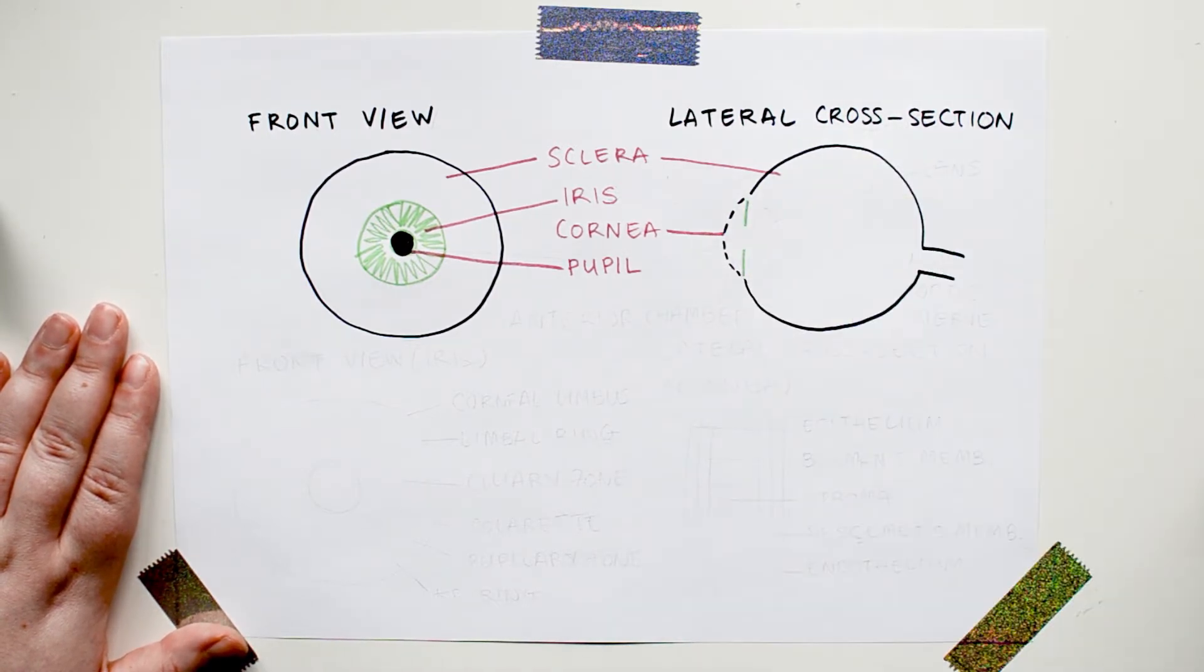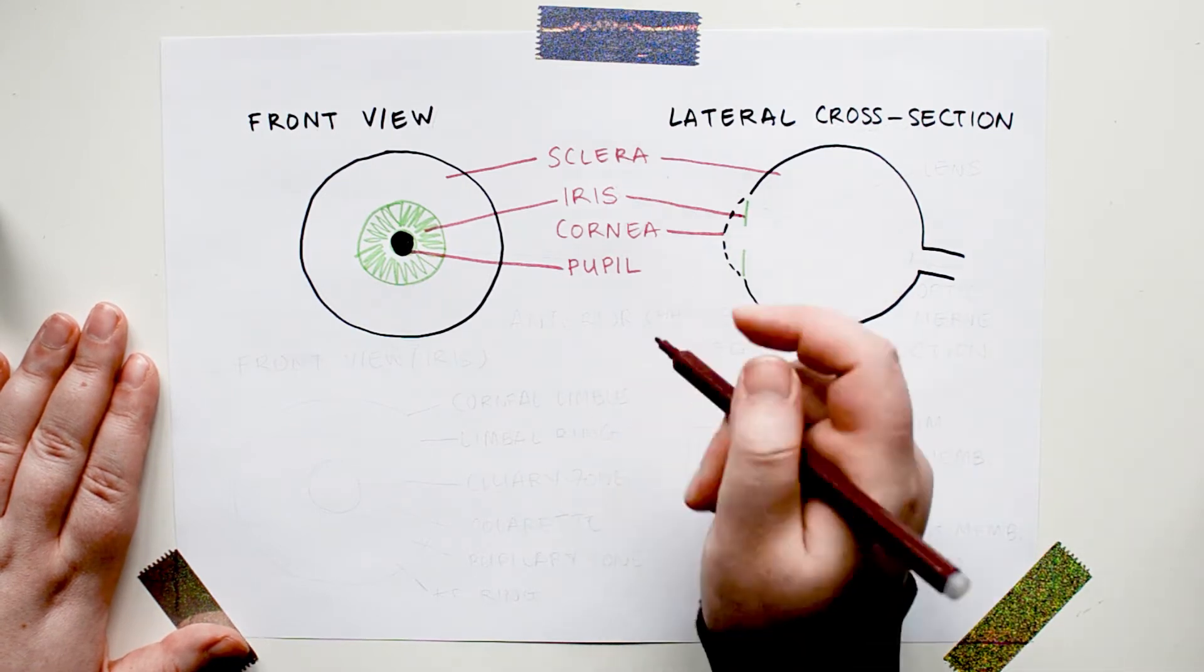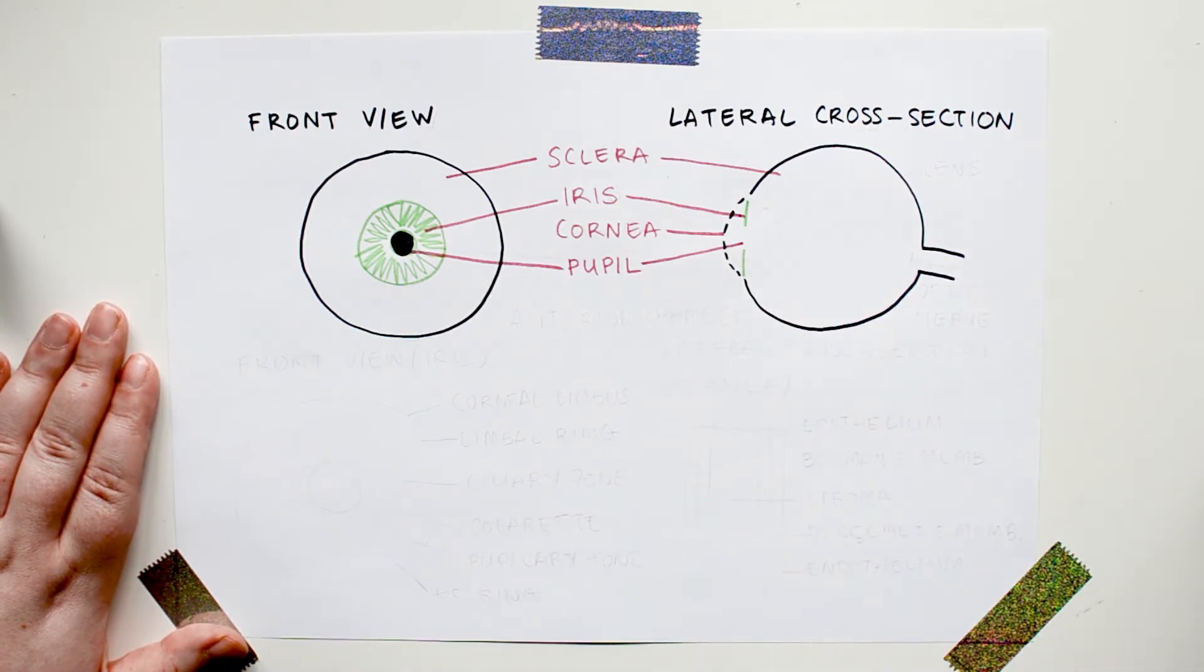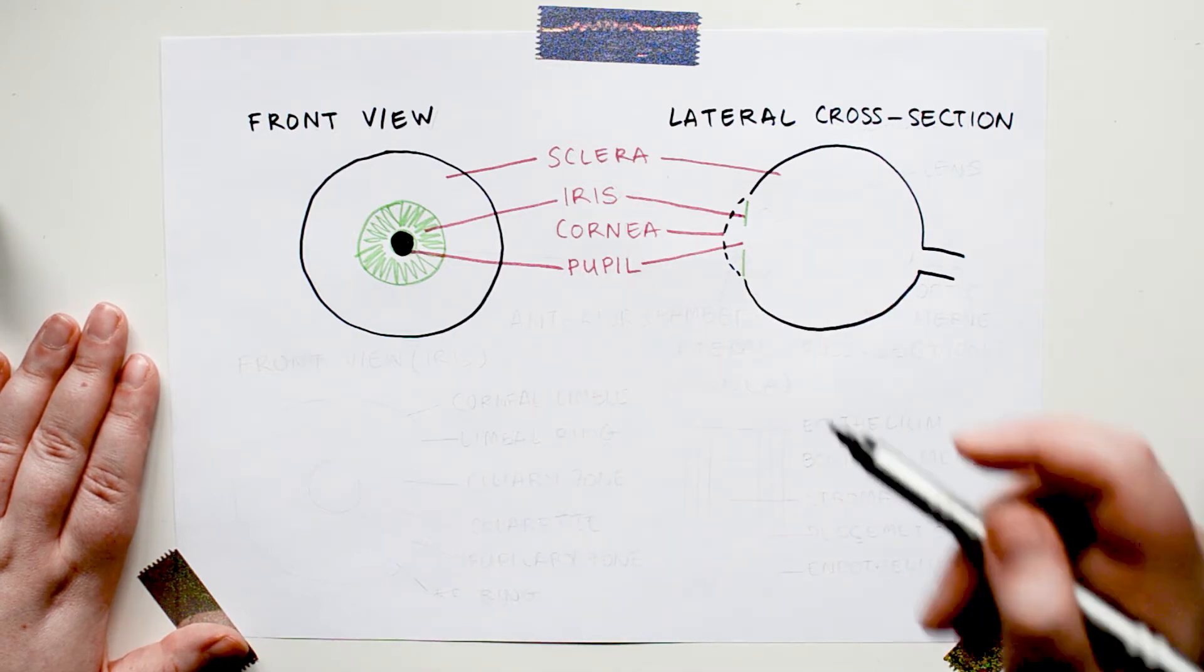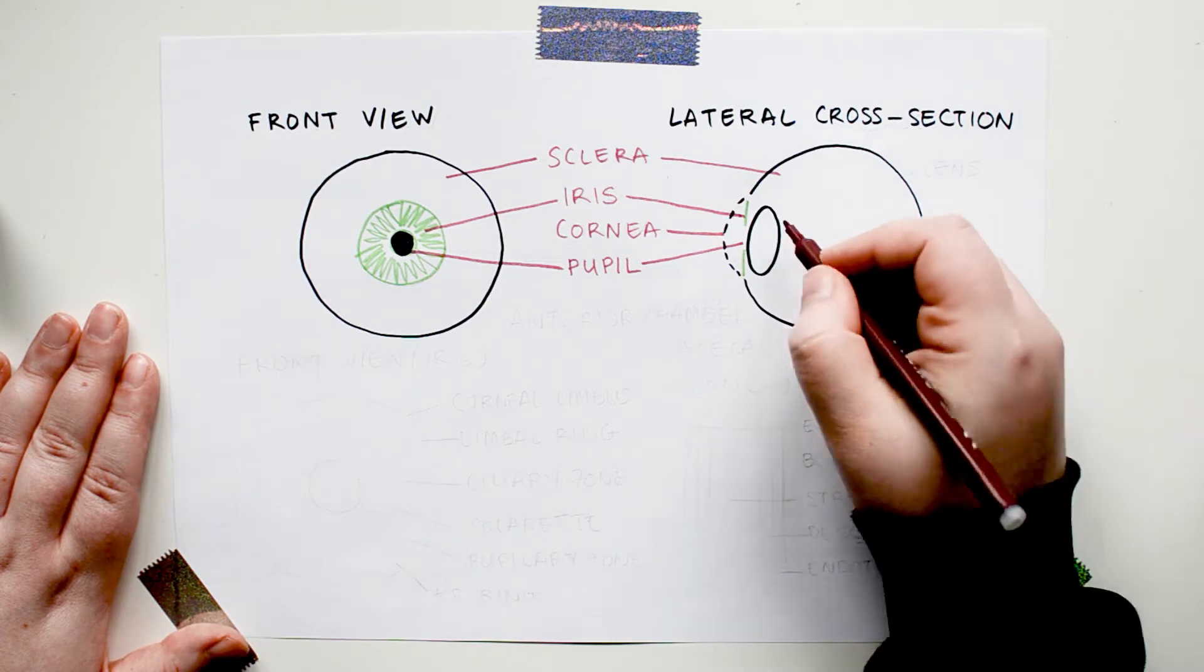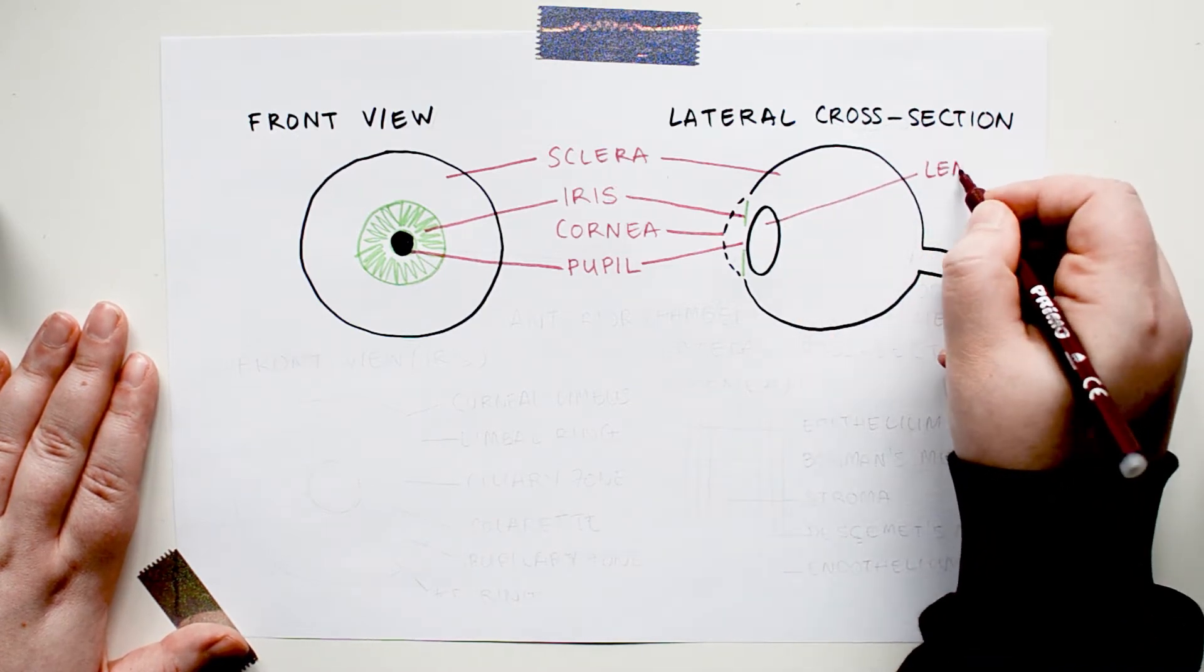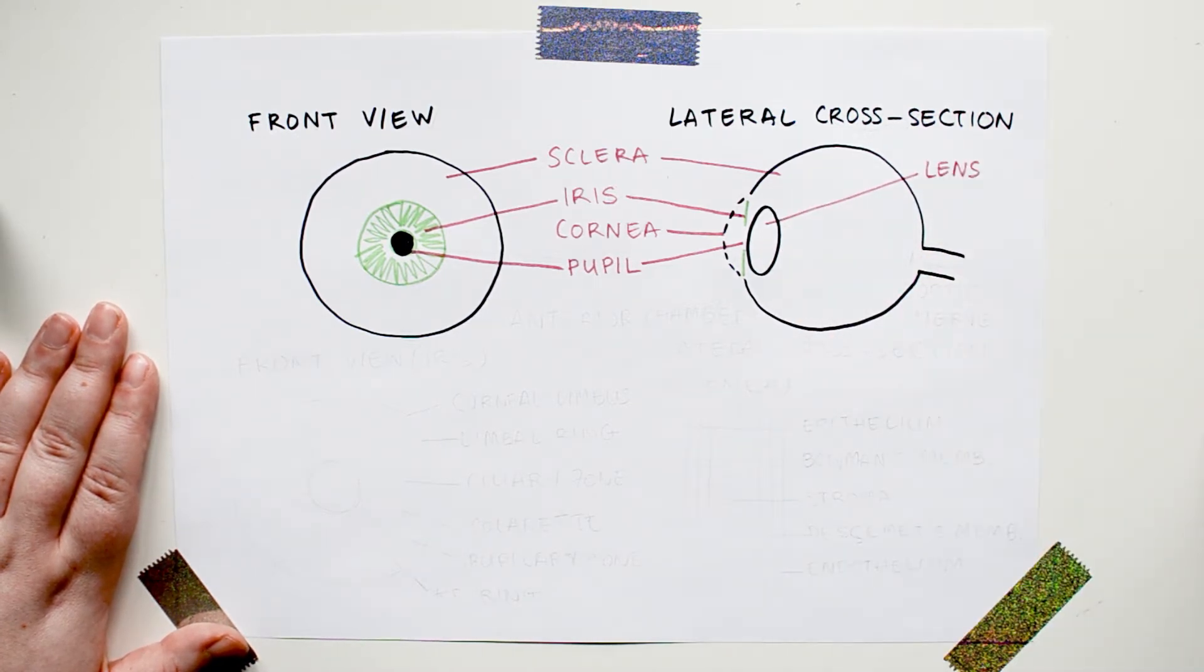Back here is the iris and the pupil is this gap in the middle. Please notice that the pupil is not an actual black surface, it's just a hole that looks black because it's not bouncing any light back out. The light goes through the pupil into the lens, which is here behind the iris.